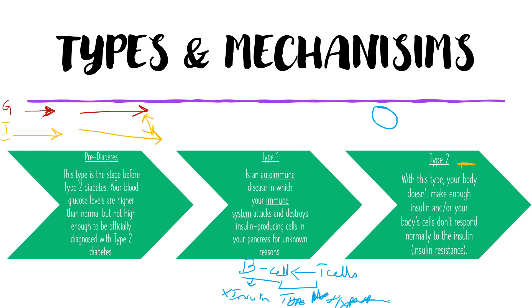Insulin is needed for the glucose to enter the cells. Think of the cell as having a door, and the key to that door is insulin. But if there is no insulin, there will be no key to the door, and the glucose is unable to go inside the cell. When this happens, the glucose keeps on moving inside the bloodstream, and this raises the amount of glucose — hence diabetes.